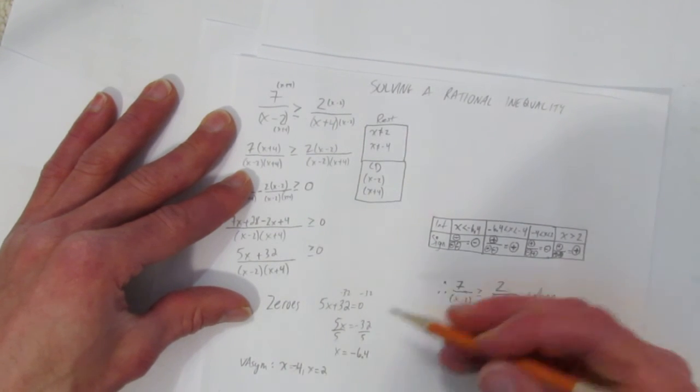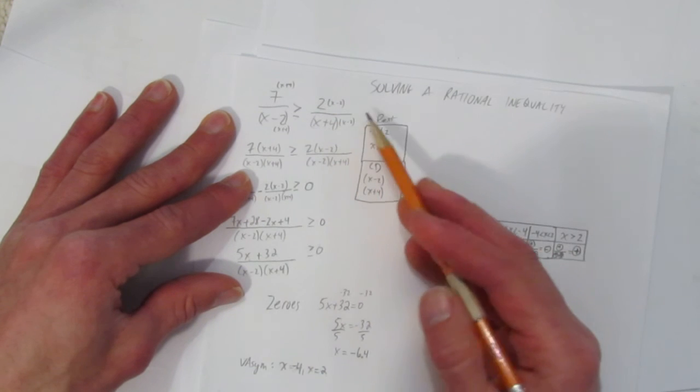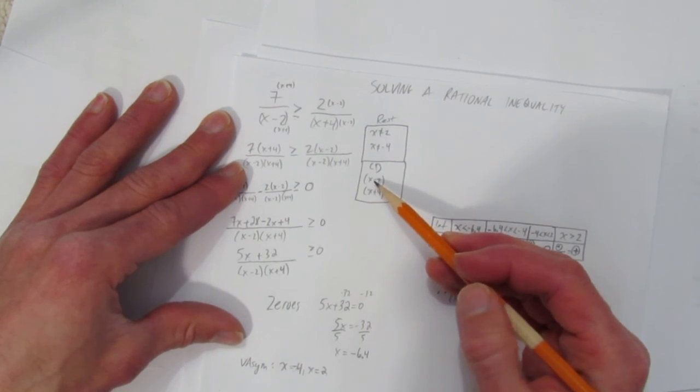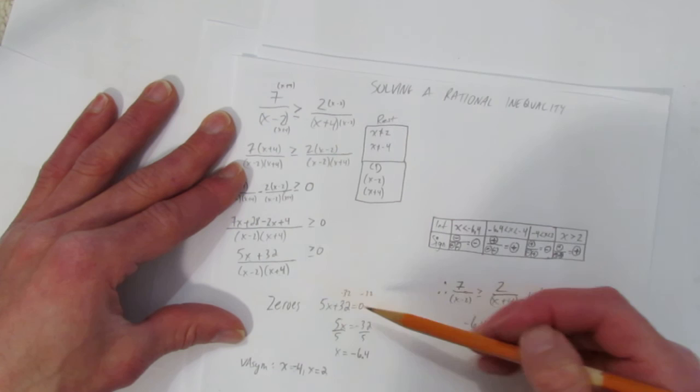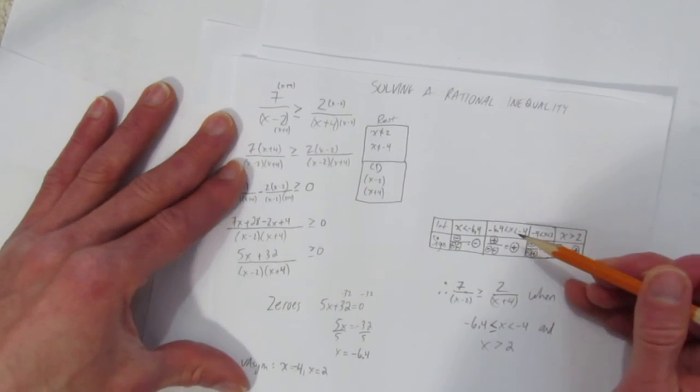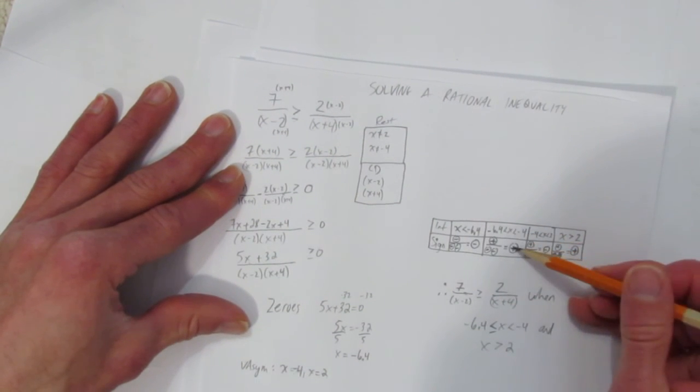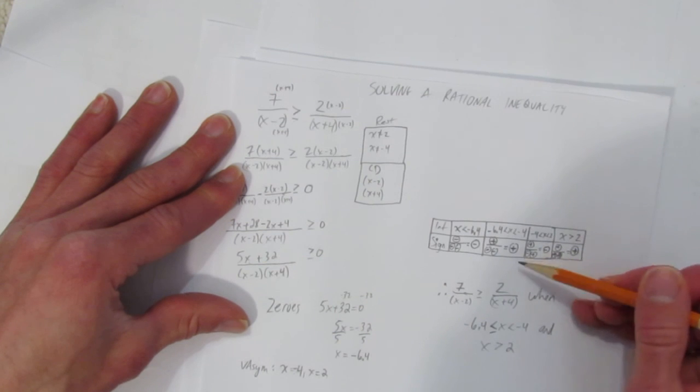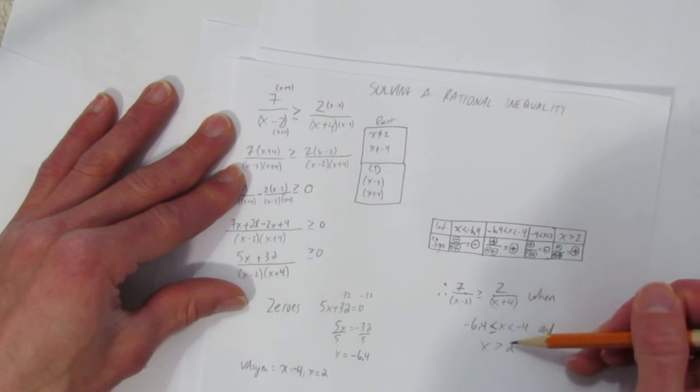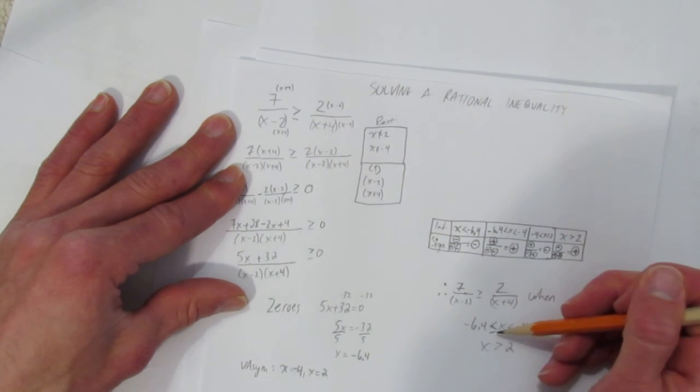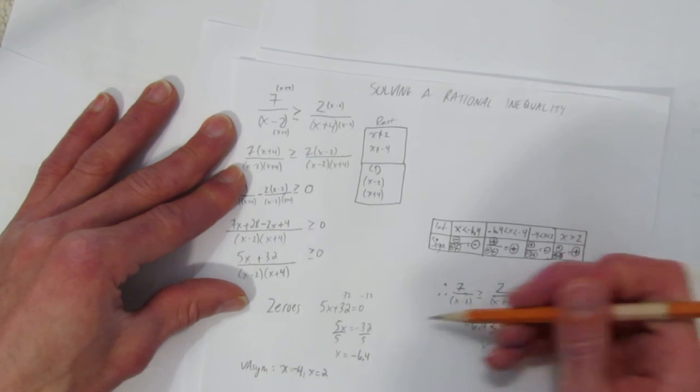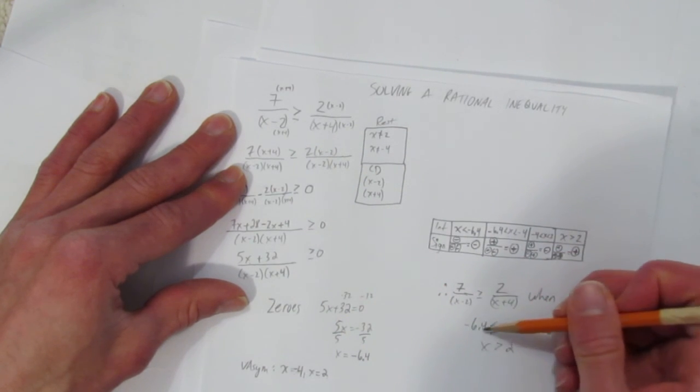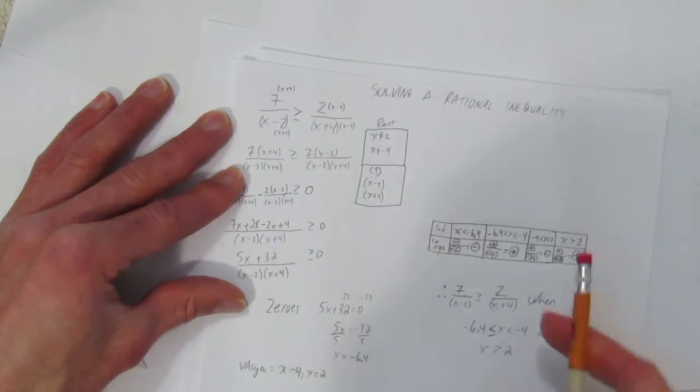So when you're done the question, that is, we solved it by doing restrictions, common denominator, simplifying, then we found the zeros and vertical asymptotes, and made an interval table to see where it was positive. But the last thing to check is, once we know where it's positive, we have to go back and check can you equal it, and can you equal it only if you're a 0, which is this one. That's how to solve a rational inequality.